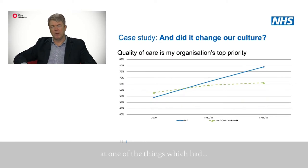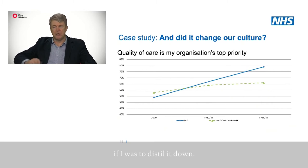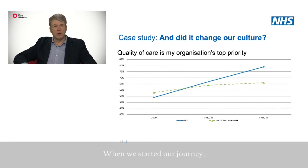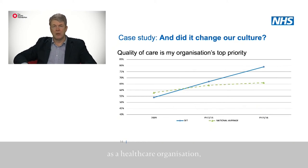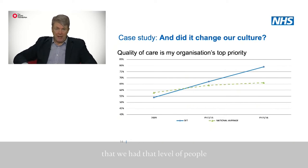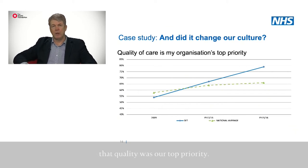One of the biggest changes — through the national staff surveys, one question was: 'Quality of care is my organisation's top priority.' When we started our journey, just over one in two people thought that quality of care was the top priority. If you think about it, as a healthcare organisation to only have one in two staff thinking that quality of care is the top priority — to me that is almost scandalous.